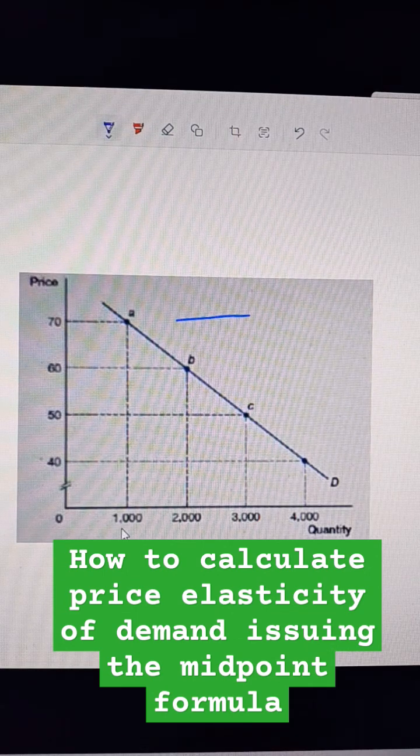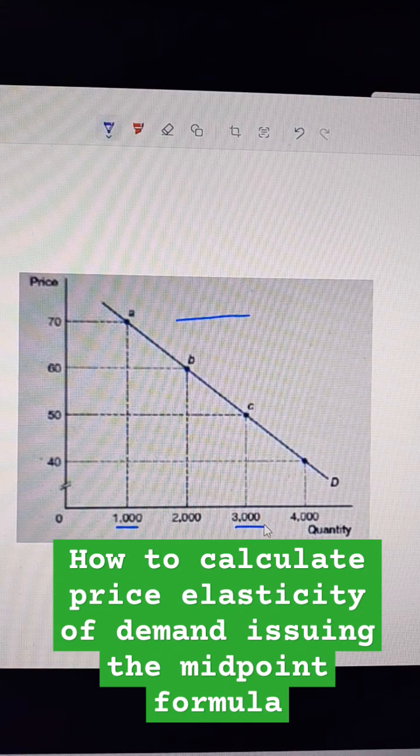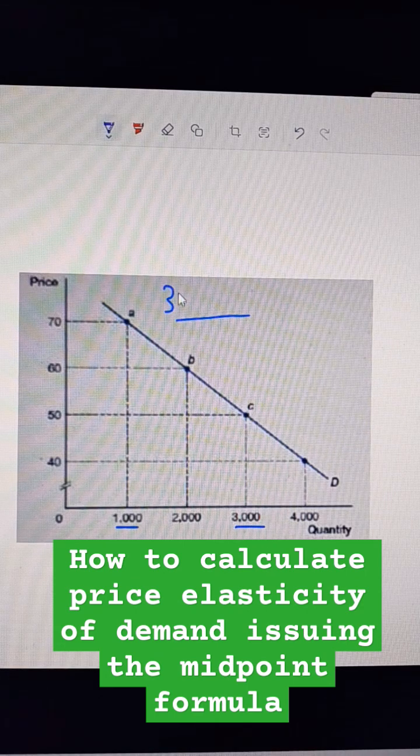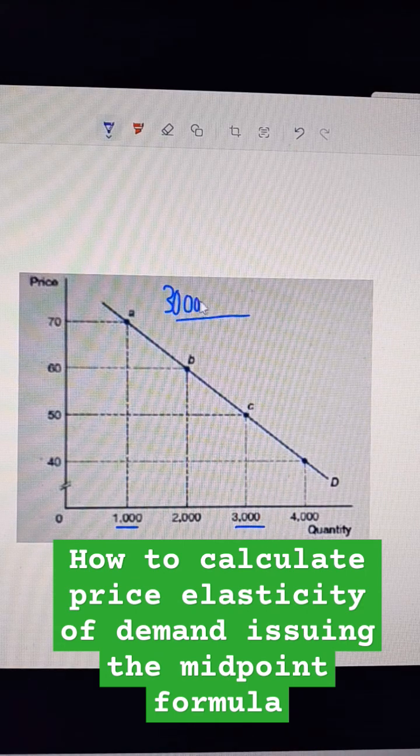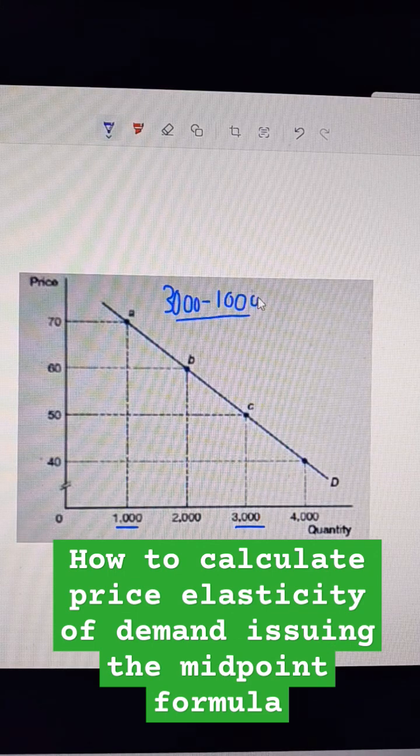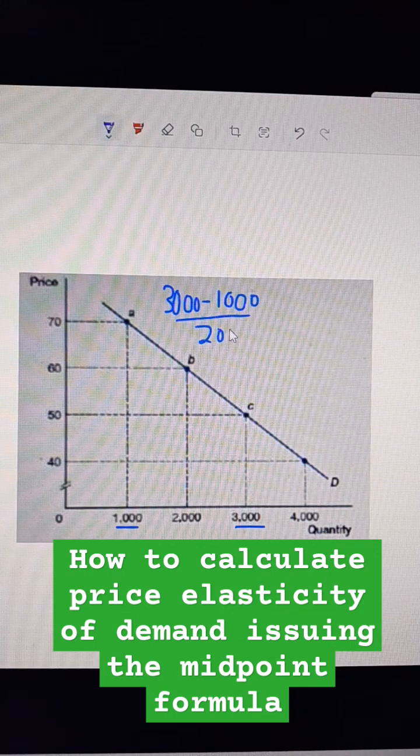So the change in quantity is going to be from 1,000 to 3,000, so I want the difference, so it would be 3,000 minus 1,000 over the midpoint.